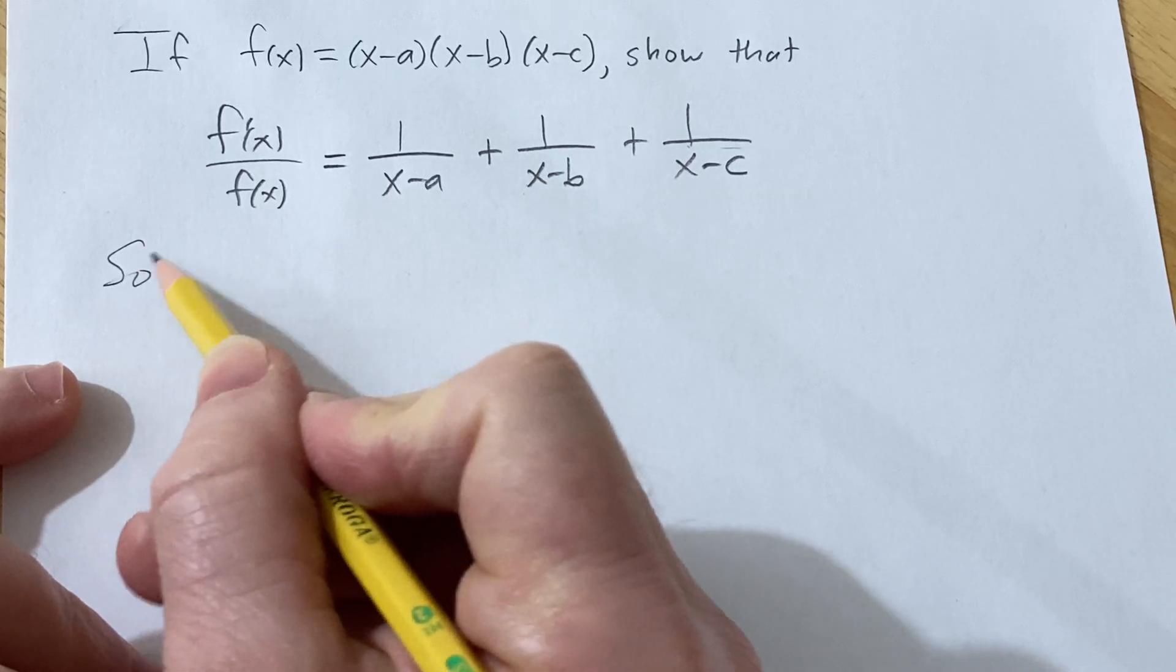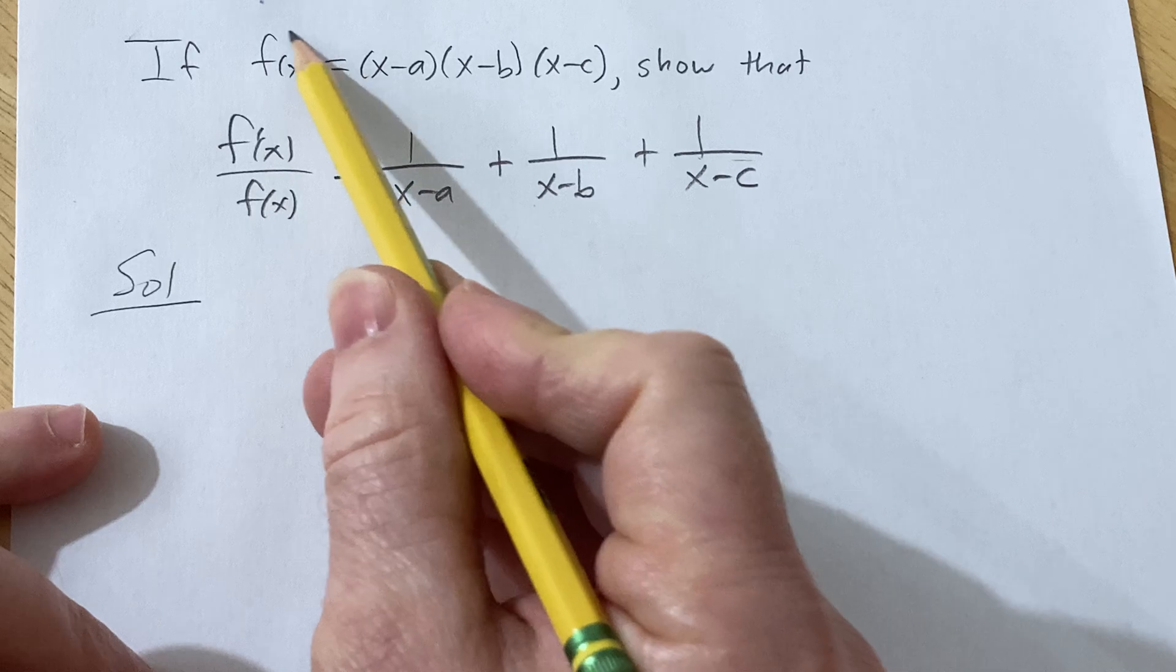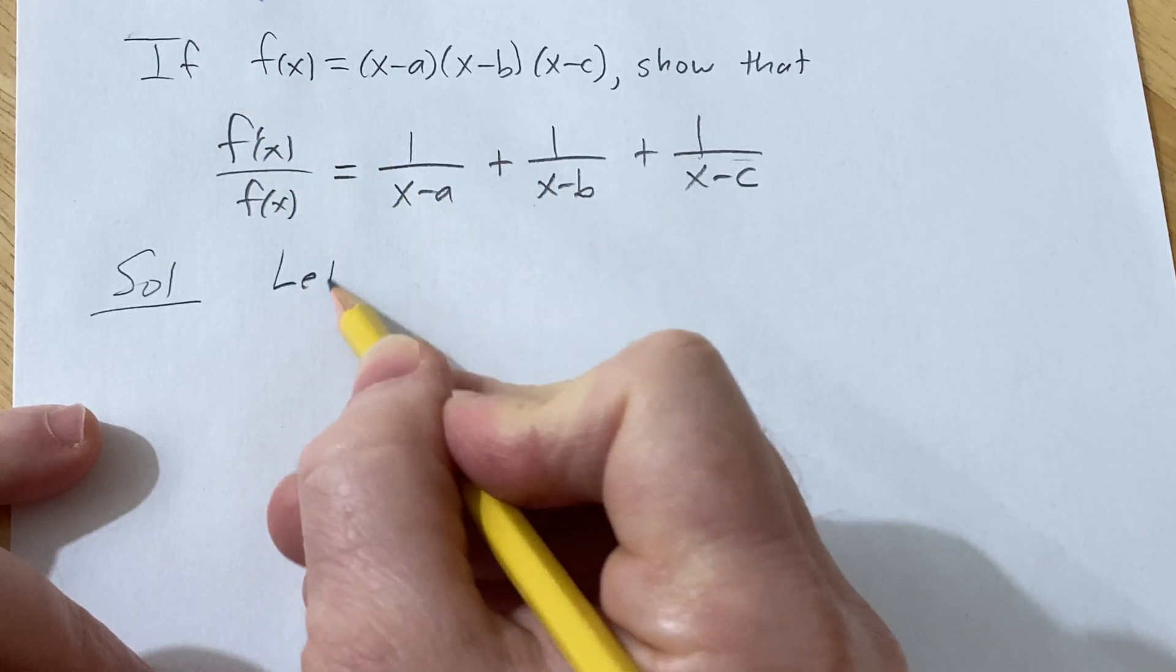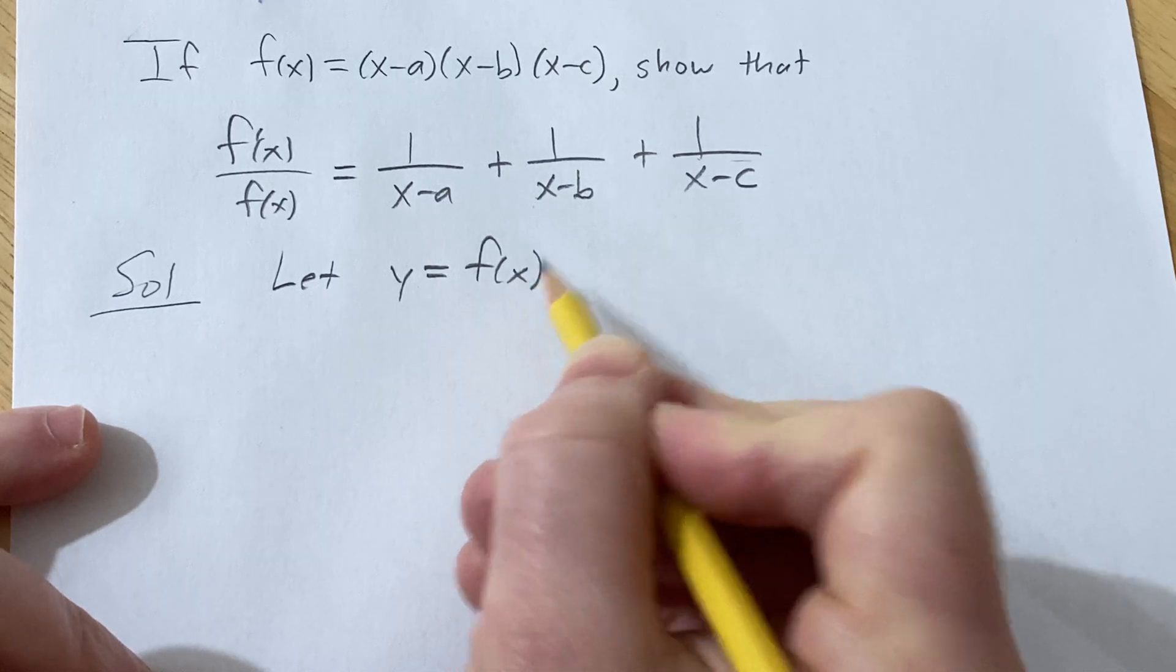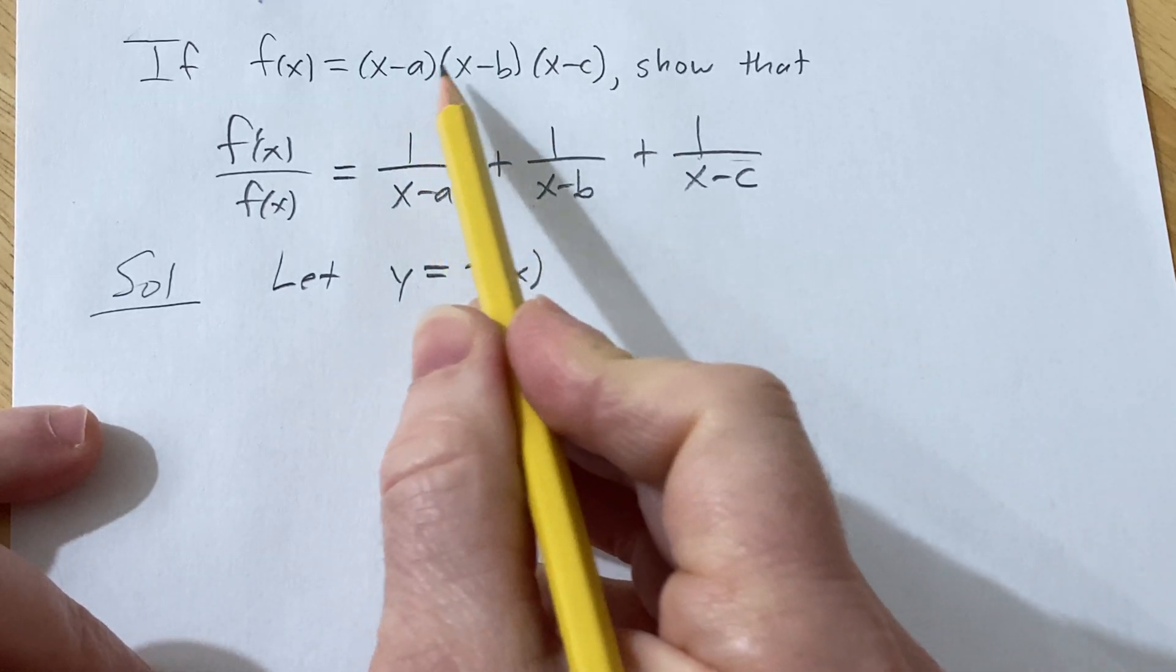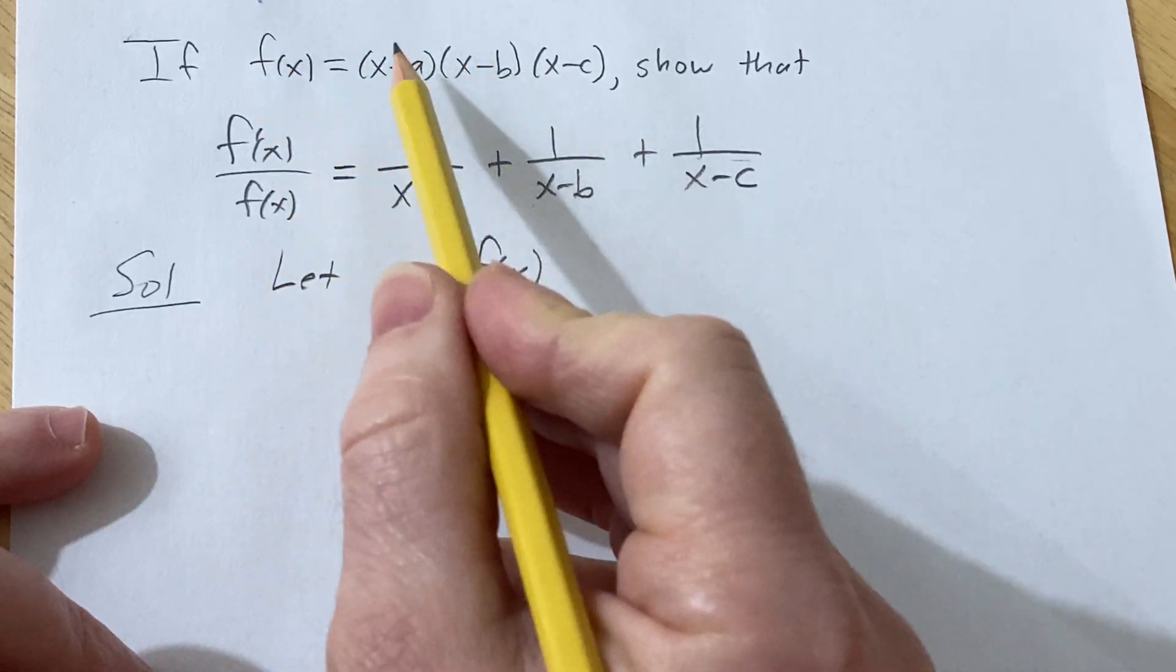Let's go ahead and work through its solution. So we'll start by calling this y. I'm going to let y be equal to f(x). And the idea here is because we have a product, we can turn it into a sum by taking the natural log of this.